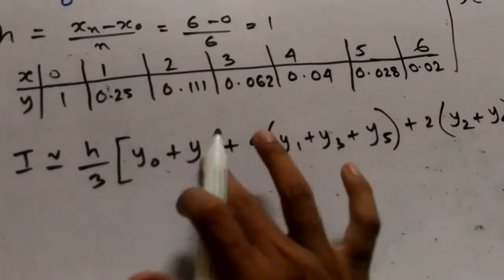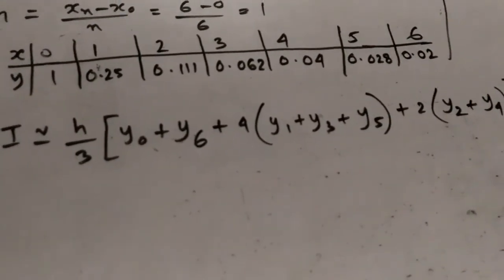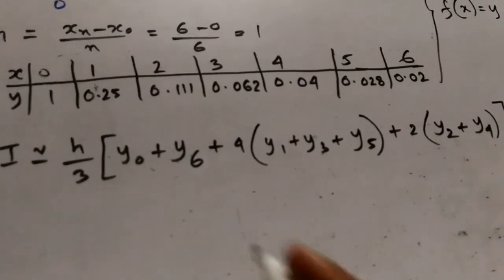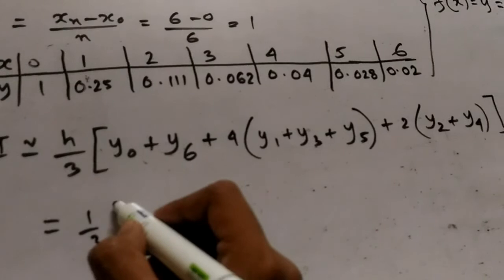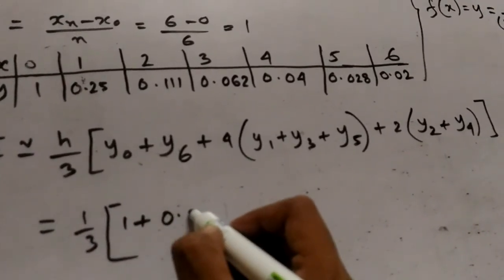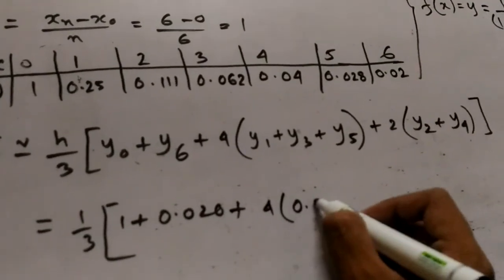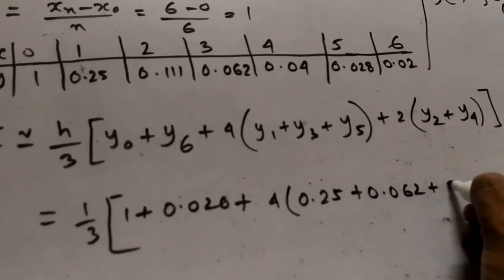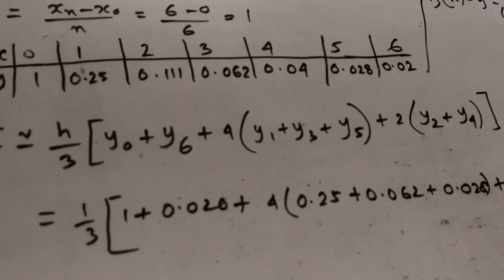This will be y6. Now we will put the values: 1/3 times 1 plus 0.020 plus 4 into 0.25 plus 0.062 plus 0.028 plus 2 into 0.111 plus 0.04.